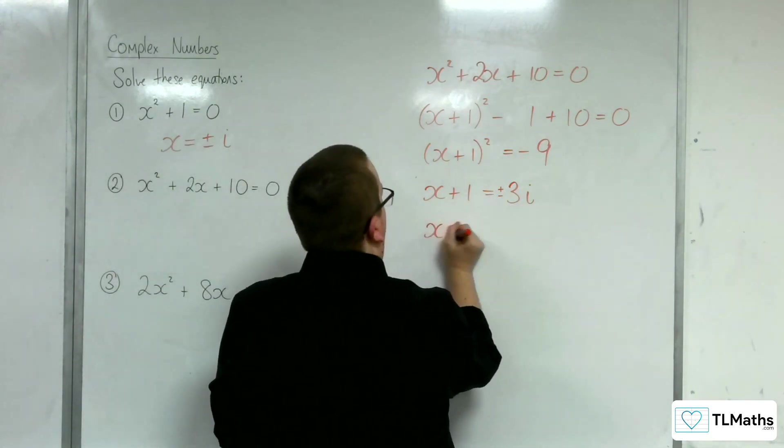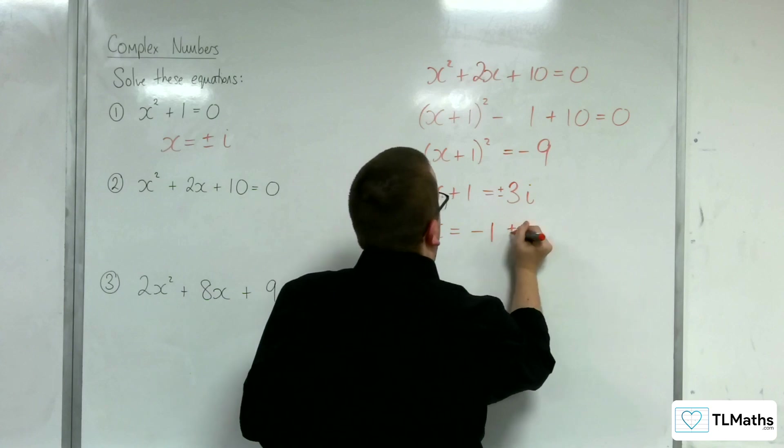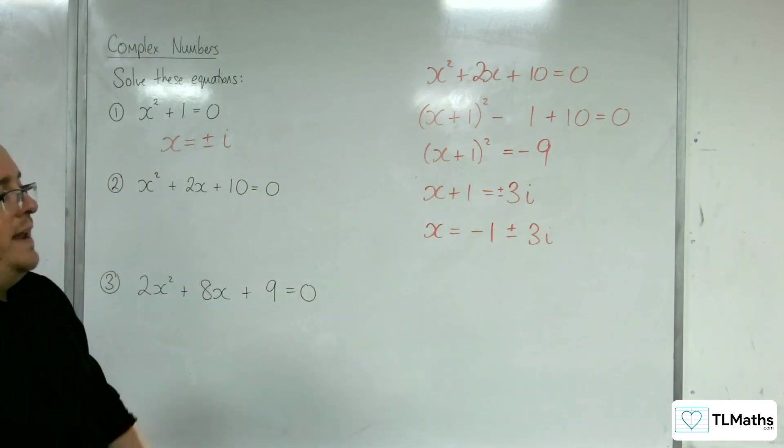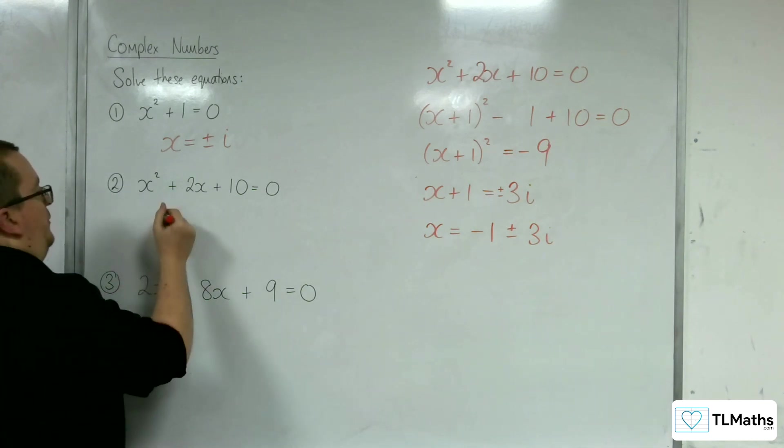Then you can take 1 from both sides. And we've got minus 1 plus or minus 3i. And they are the complex solutions to number 2.